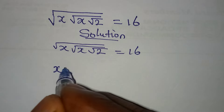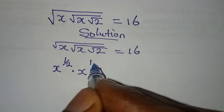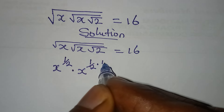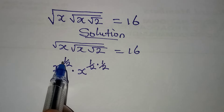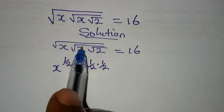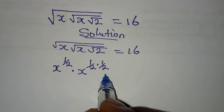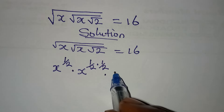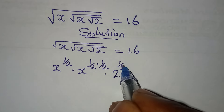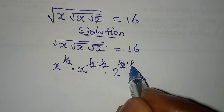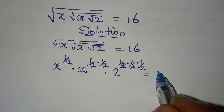This is the same thing as x to the power of 1 over 2, multiplied by x to the power of 1 over 2 times 1 over 2. Because this x is under one square root sign — that is a power of 1 over 2. The second x is under two square root signs, and the 2 here is under three square root signs, which is 1 over 2 times 1 over 2 times 1 over 2. This would be equal to 16.